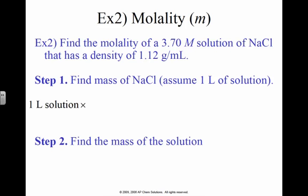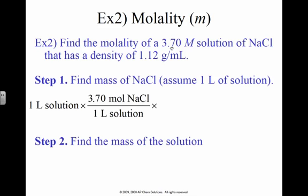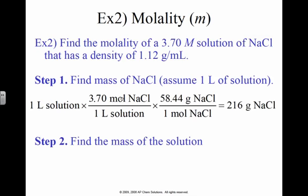Find the molality of a 3.7 molar solution of NaCl that has a density of 1.12 grams per milliliter. Well, if I don't give you any information, start making stuff up. For example, let's just use 1 liter, because that's a simple number. Well, according to this right here, 1 liter is 3.7 moles. Moles to grams, now I have 216 grams of salt in 1 liter of this solution.